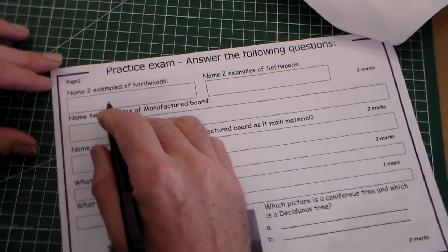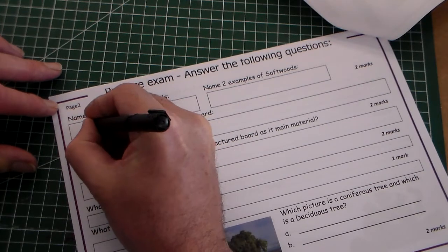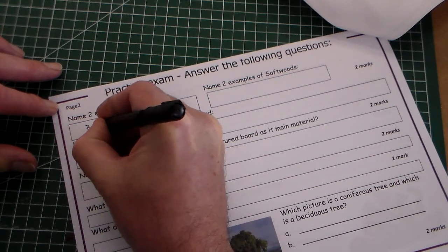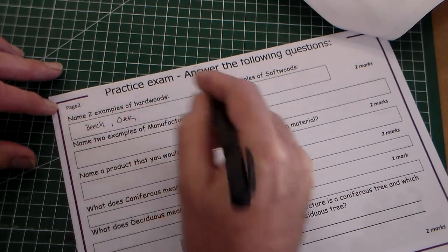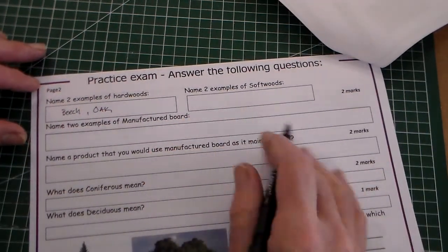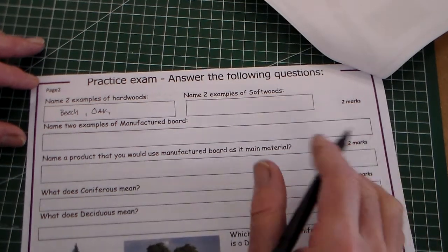So the first question is name two examples of hardwood. I'm going to say beech and oak. Other ones you could add are willow, you could add teak, ash.